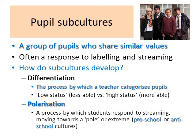This could lead to polarisation — a process by which students respond to streaming by moving towards a pole. If we think about the North Pole and the South Pole as complete opposites, this leads to the creation of pro-school or anti-school subcultures. Once students have been differentiated and placed in different streams, they may begin to form subcultures. In the top streams, these are most likely to be pro-school subcultures; in the bottom streams, they are more likely to be anti-school subcultures.